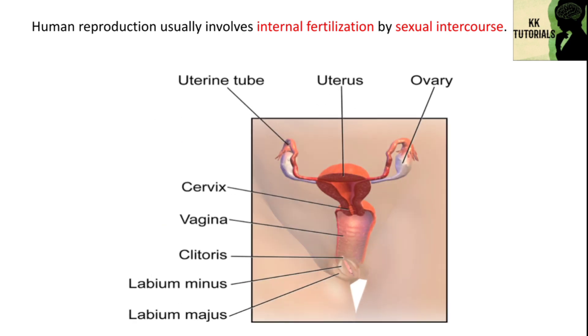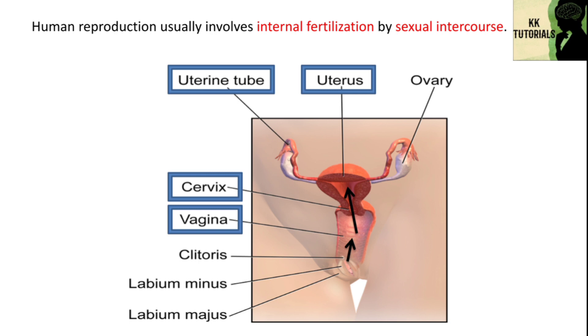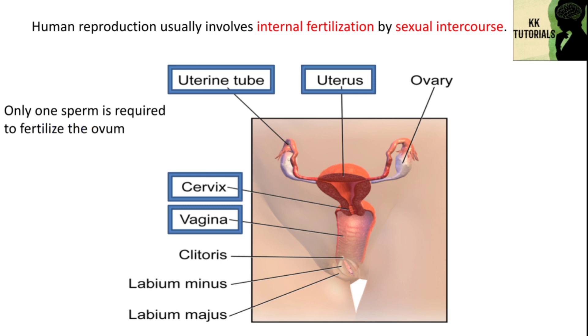Human reproduction usually involves internal fertilization by sexual intercourse. In this process, semen containing sperms ejaculated by the male travels into the female reproductive system. From the vagina, a small proportion of the sperm pass through the cervix into the uterus and then into the fallopian tubes, also called uterine tubes, for fertilization of the ovum. Only one sperm is required to fertilize the ovum.